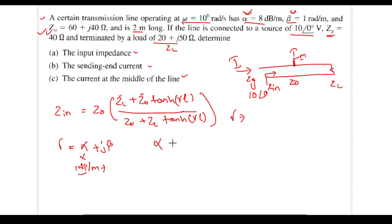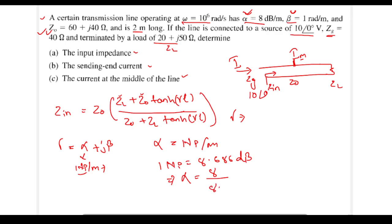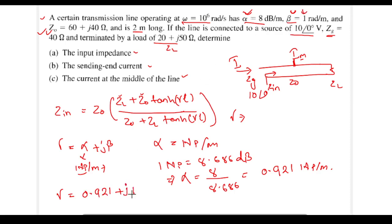The alpha value is normally expressed in Nepers per meter, and one Neper equals 8.686 dB. So we convert: alpha equals 8 divided by 8.686, which comes to approximately 0.921 Nepers per meter. Therefore gamma equals 0.921 plus j·beta, and since beta is given as 1 radian per meter, gamma equals 0.921 plus j1.